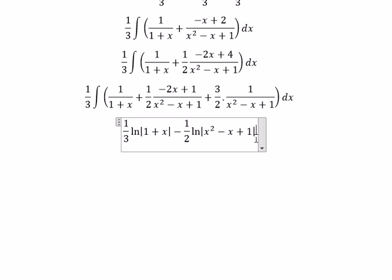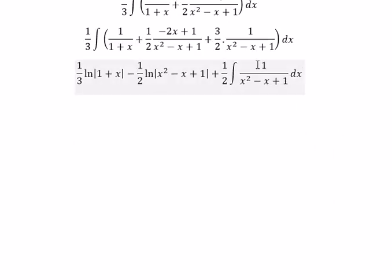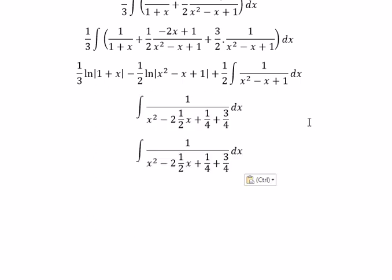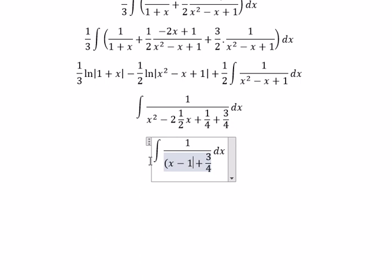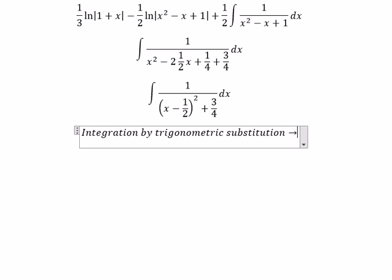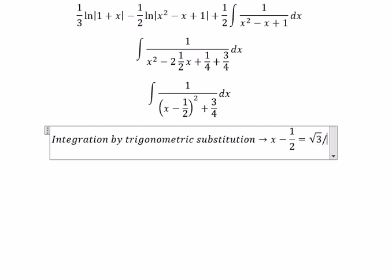Now we just have only the integral of 1 over 2 times 1 over x squared minus x plus 1 dx. I will concentrate on this one only. We know that x squared minus 2x plus 1 equals 1 over 4 plus 3 over 4. We can write this as x minus 1 over 2 squared plus 3 over 4. Now we can use integration by trigonometric substitution. We set x minus 1 over 2 equals the square root of 3 over 2 times tan t.